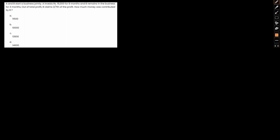A and B start a business jointly. A invests 16,000 for 8 months and B remains in the business for 4 months. Out of the total profit, B claims 2/7th of the profit. How much money was contributed by B?